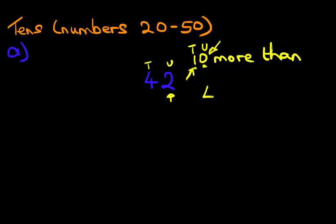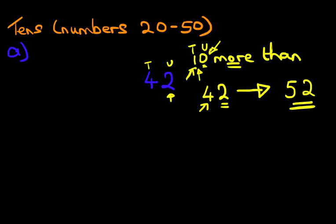So let's write this down. We've got 42. It's more than, so we're going forwards. Don't forget this 2 is not going to change, so we can write that in. This 4 is the number that is going to change because of this 1 over here. Because it's more than, we're going to count forwards. What is 1 more than 4? Well, 1 more than 4 is 5. And that is our answer — it's as simple as that.